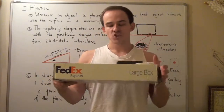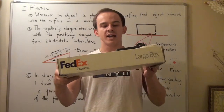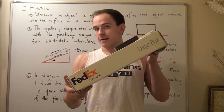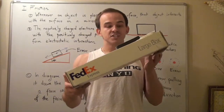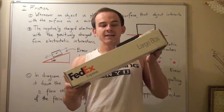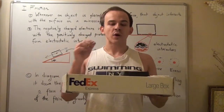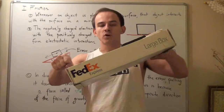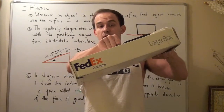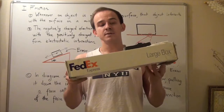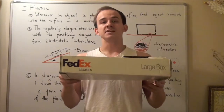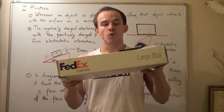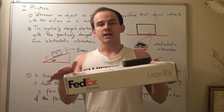Now let's see what happens when I begin inclining the box — say to an angle of 30 degrees. Nothing happens to the eraser, but something should happen. When I increase my angle, I create a component force of gravity pointing along the x-axis, along the incline. This component force should technically pull the eraser downward along the incline, but it doesn't.